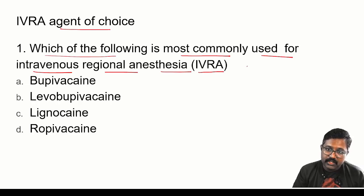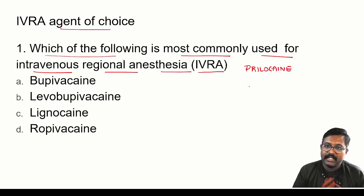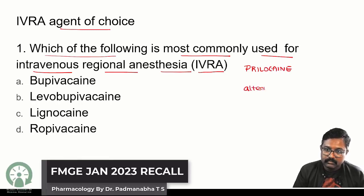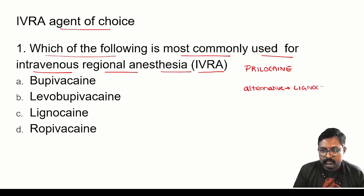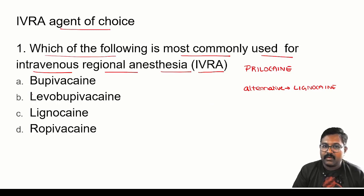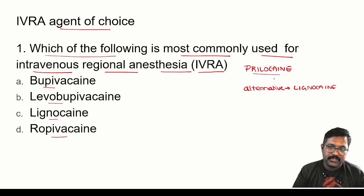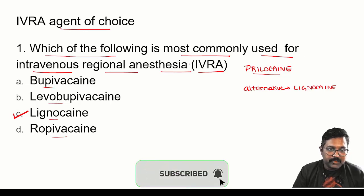The most commonly used drug for intravenous regional anesthesia is prilocaine, and the alternative is lignocaine. The options given are bupivacaine, levobupivacaine, lignocaine, and ropivacaine. Since prilocaine is not in the options, we go for the alternative drug, which is lignocaine. So the answer here is lignocaine — the most commonly used intravenous regional anesthesia drug in this context.